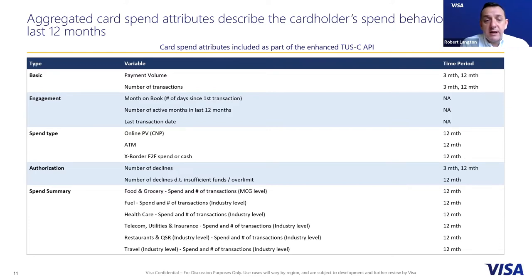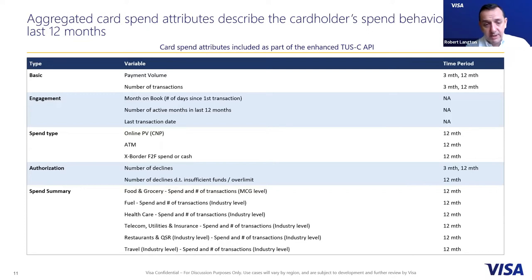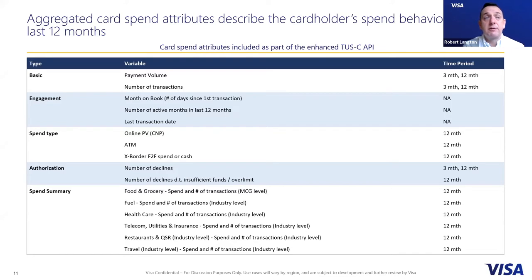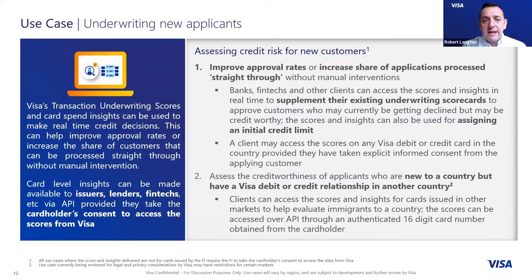We confirm authorization declines and number of declines due to insufficient funds. We also look at spend counts for various categories: essential spends like food, grocery, fuel, healthcare, telcos, utilities, and insurance; and discretionary spend such as restaurants, QSRs (quick service restaurants — takeaways and fast food), and travel at an industry level — airlines, holiday providers, currency exchange, tours and excursions.